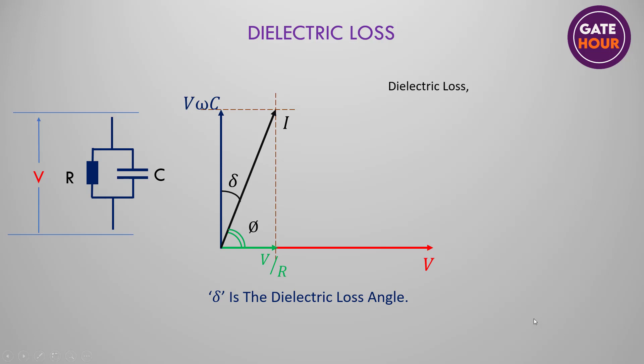Dielectric loss is the power dissipated in the resistance. Therefore, it can be expressed as P equals V squared divided by R. From the phasor diagram, tan delta can be written as V by R divided by V omega C. Therefore, V divided by R equals V omega C times tan delta.